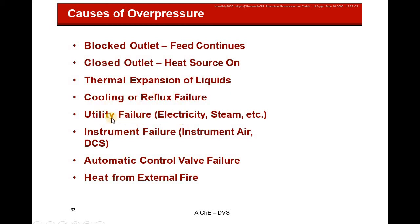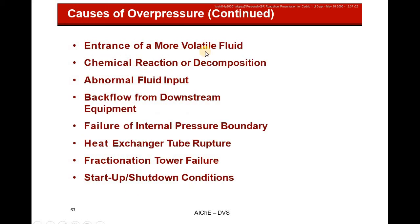Additional overpressure causes: utility failures including electrical problems, compressor failure, instrument failure such as a control valve malfunction causing temperature or pressure to spike; heat from external fire or solar radiation; entrance of very volatile fluid; runaway chemical reaction; abnormal fluid input or contamination; backflow from downstream equipment; failure of internal pressure boundaries such as heat exchanger tube rupture, pipe rupture, or fractionation tower failure; and incorrect start-up or shut-down procedures.